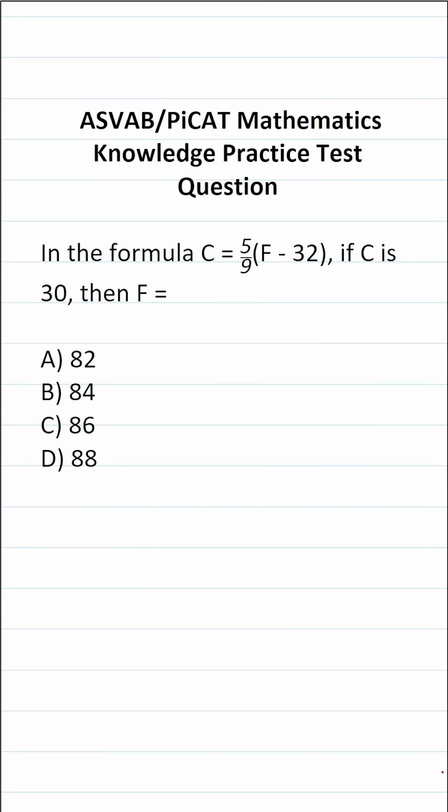This math knowledge practice test question for the ASVAB and PiCAT says in the formula C equals 5 ninths times F minus 32, if C is 30, then F equals.